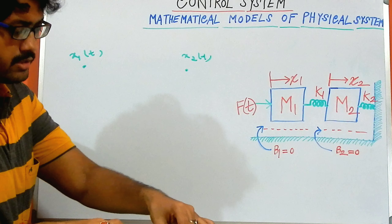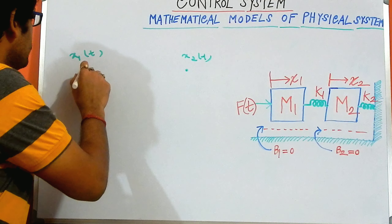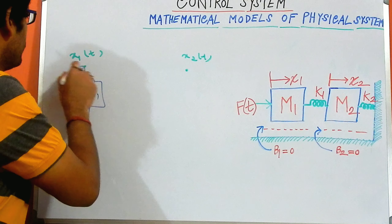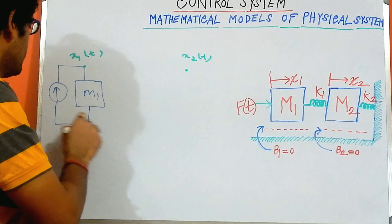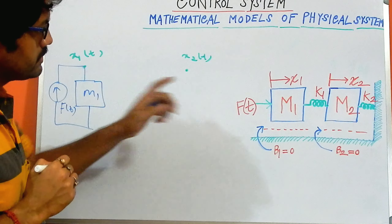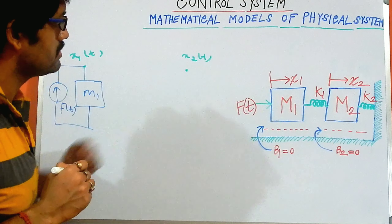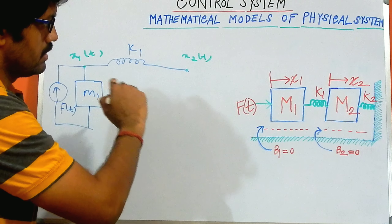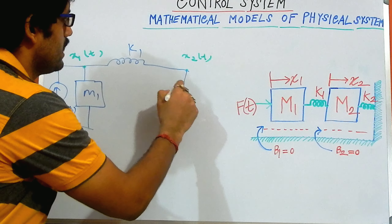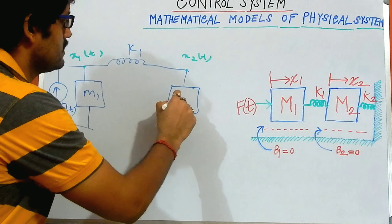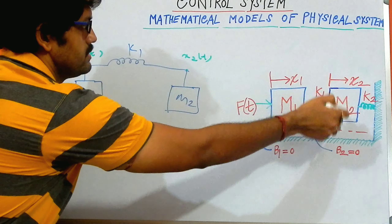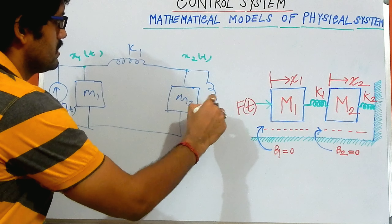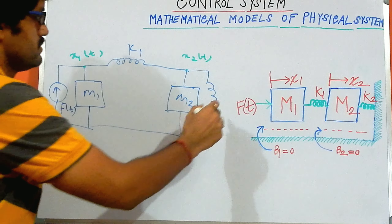What are the connecting points over here? x1 is connected with m1, and the force is connected over there — this one is our Ft. And in between x1 and x2, I have the spring k1. This is our k1. And with x2, I can see that I am connecting the m2, as x2 is connected with m2. The last one is k2, which is connected with our x2. So this one is our k2.